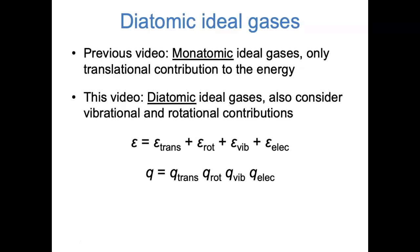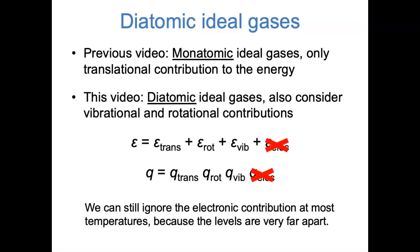Unlike individual atoms, diatomic molecules have bonds that can vibrate, and also the molecules can tumble in space — they can rotate. So that means the total energy of a diatomic molecule includes vibrational and rotational energies, and therefore the partition function and heat capacity also have these contributions. For diatomic molecules, we can still safely ignore the electronic contribution to the energy, because the molecular orbitals are still relatively far apart compared to kBT at most temperatures, so it's almost entirely the electronic ground state that's populated.